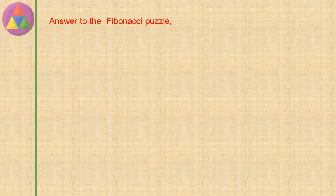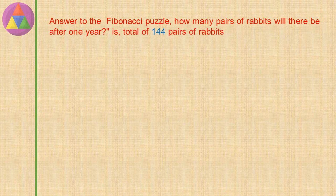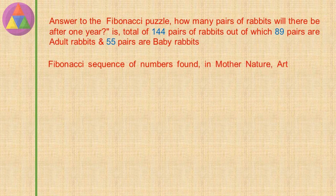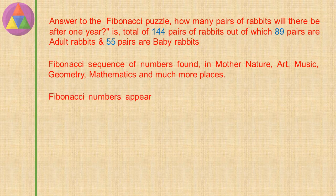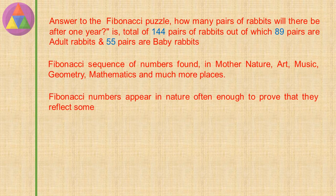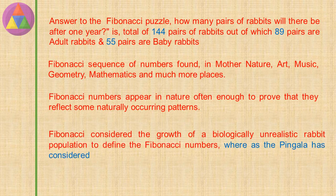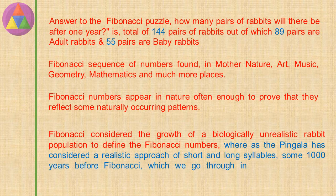The answer to the Fibonacci puzzle — how many pairs of rabbits will there be after one year — is a total of 144 pairs: 89 pairs of adult rabbits and 55 pairs of baby rabbits. The Fibonacci sequence of numbers is found in mother nature, art, music, geometry, mathematics, and much more. Fibonacci numbers appear in nature often enough to prove they reflect naturally occurring patterns. Fibonacci used a biologically unrealistic rabbit population to define the Fibonacci numbers, whereas Pingala considered a realistic approach using short and long syllables some 1,000 years before Fibonacci.